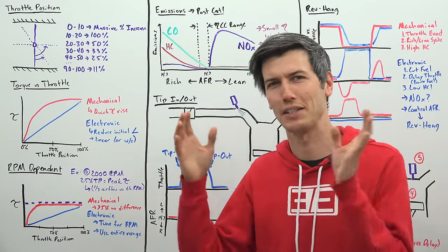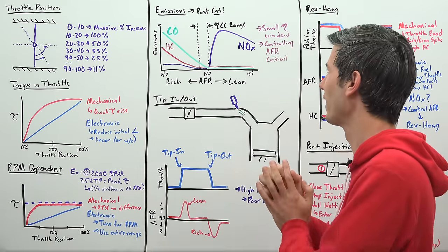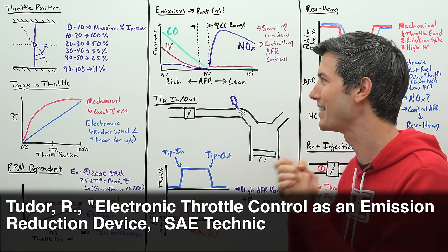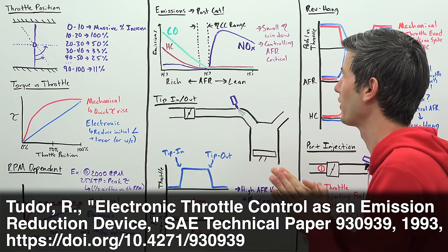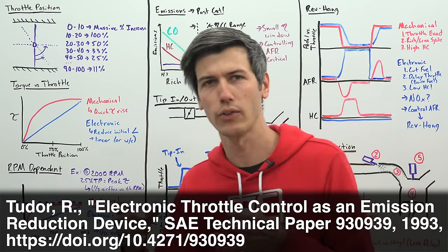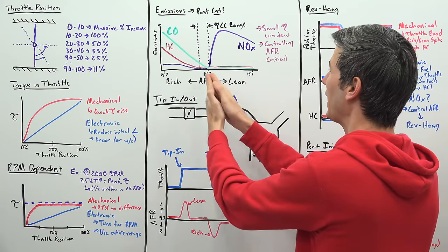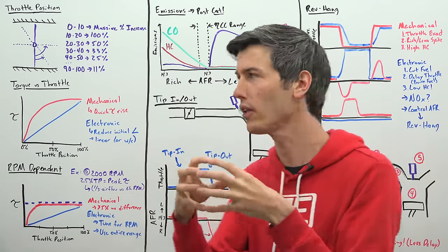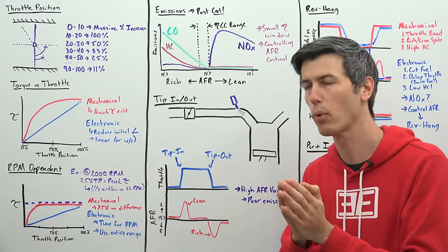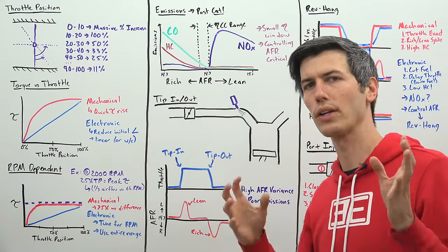So how do electronic throttle bodies lead to better emissions? And how does this lead to rev hang? So I found a study from the 1990s that details this process. And so the important thing to know is that catalytic converters, which are used to improve the emissions from your car, are effective in a narrow air fuel ratio range. So the amount of air and fuel entering your cylinders, that ratio is very important for controlling emissions.